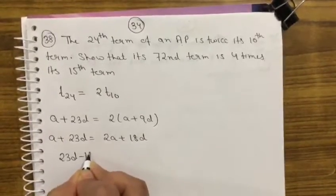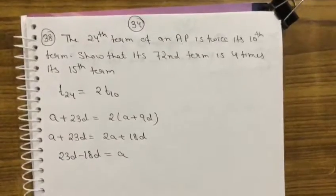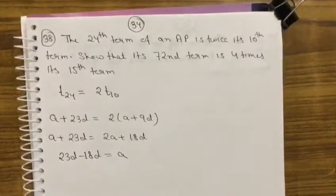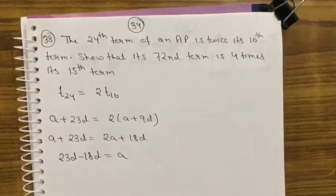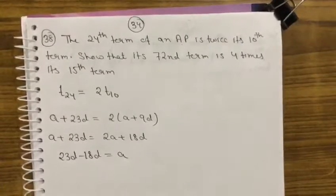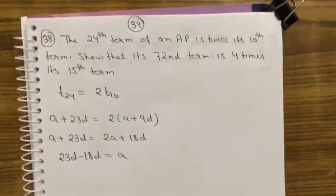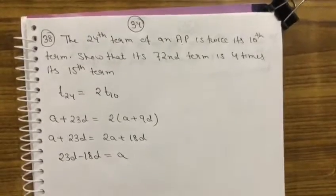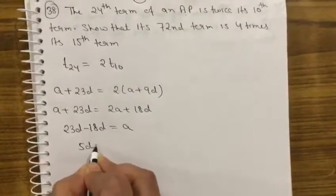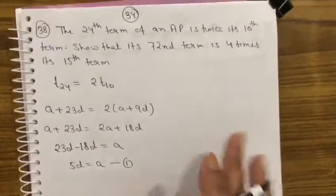23d minus 18d equals a. 5d equals a. First one. Now what is the proof?